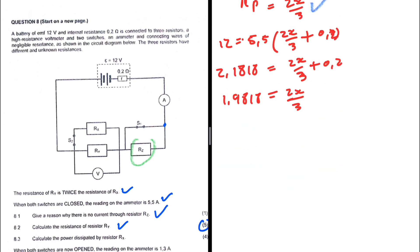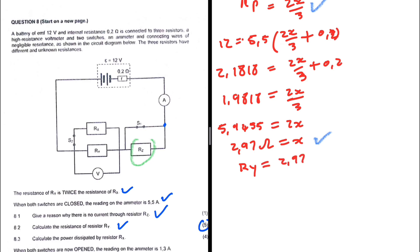Cross-multiplying by 3 gives 5.9455 equals 2x. Dividing both sides by 2, x equals 2.970, which is the resistance of Rx. We are looking for Ry, so Ry equals 2x, which is 2.97 multiplied by 2, giving 5.9455 ohms. Note that Ry is simply 2x, so we could have read it directly, but that is fine.